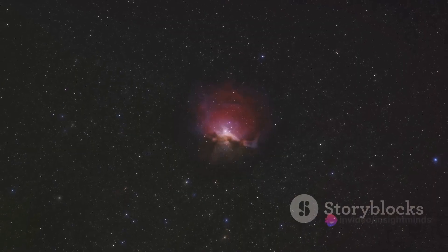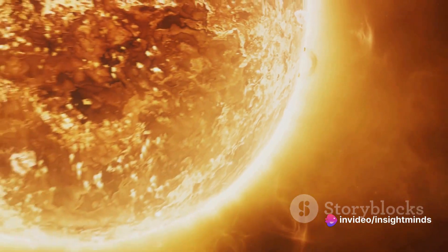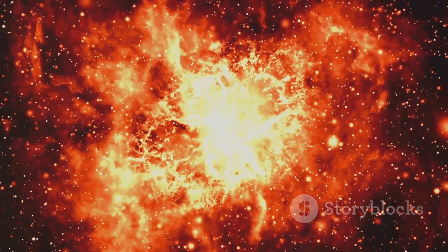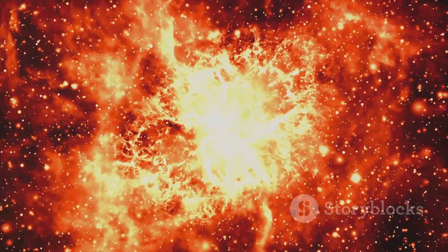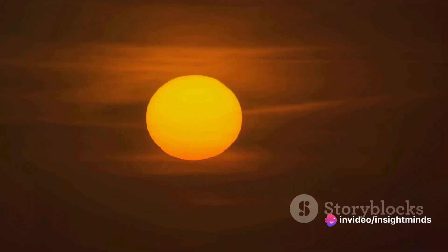On the other hand, Betelgeuse, a red supergiant, is nearing the end of its life cycle. Despite its impressive size and cooler temperature, its days are numbered. In the cosmic timeline it's expected to go supernova in the near future, becoming a brilliant spectacle before fading away. It's a stark contrast to our Sun's steady, long-lasting glow.